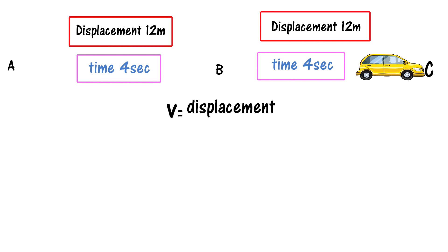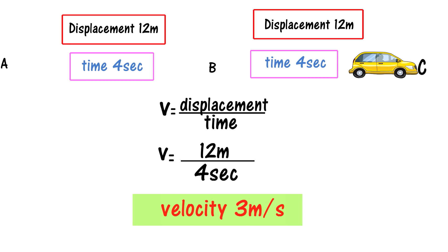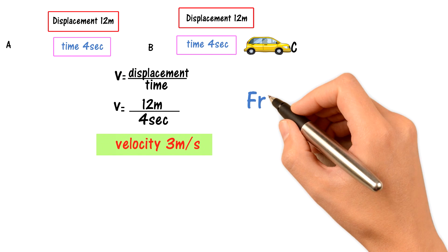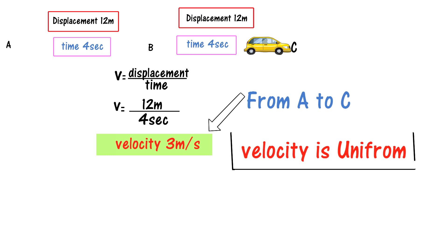Velocity equals displacement divided by time. Here, velocity equals 12 meters divided by 4 seconds, giving us 3 meters per second. The velocity from A to B is 3 m/s, and from B to C is also 3 m/s — velocity remains the same, so we say velocity is uniform.